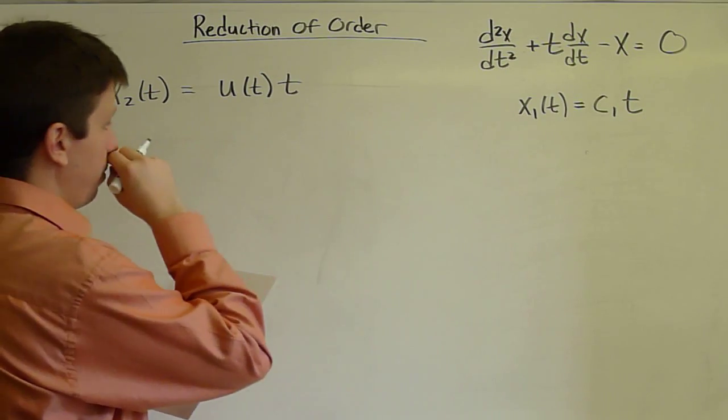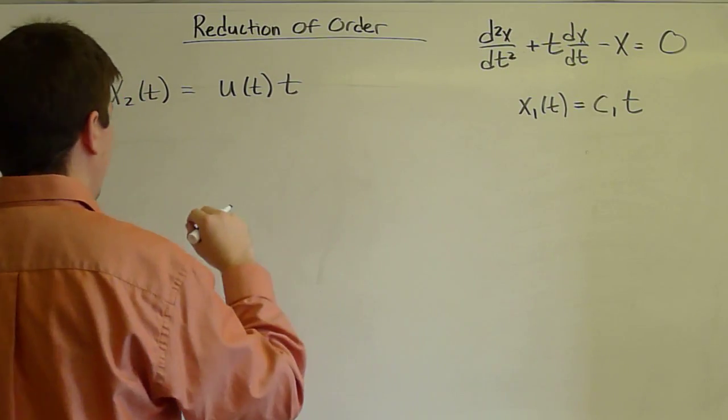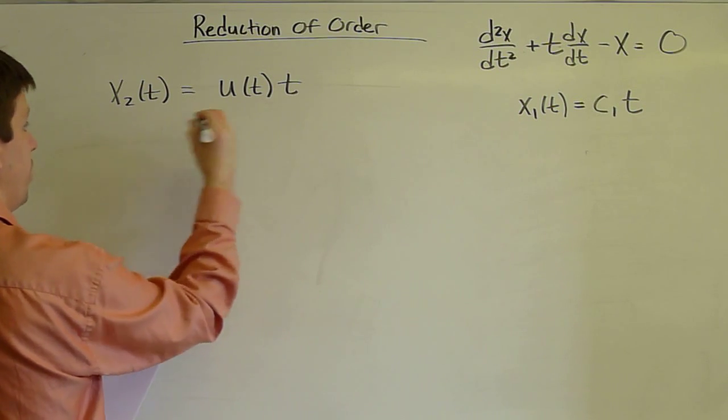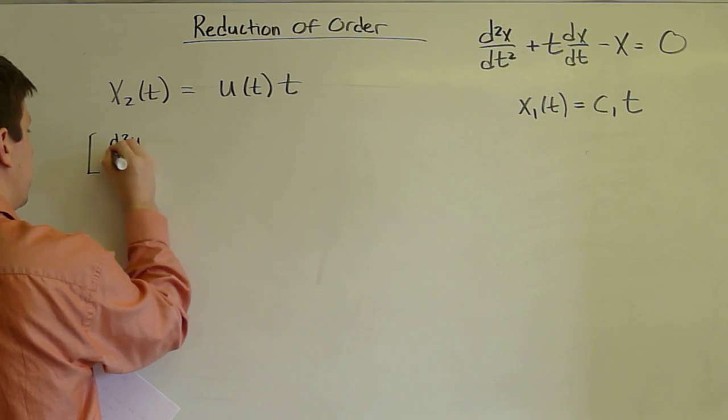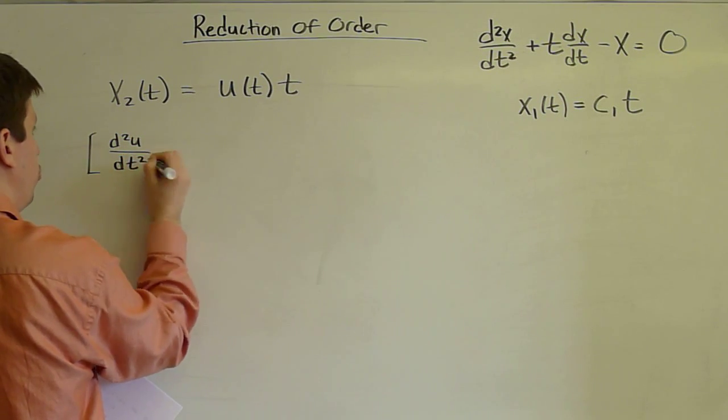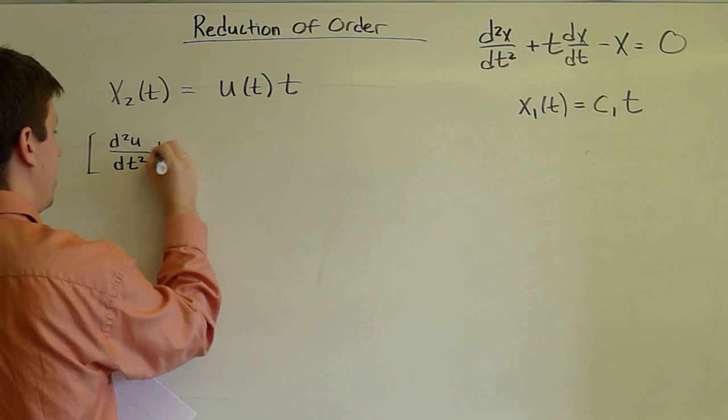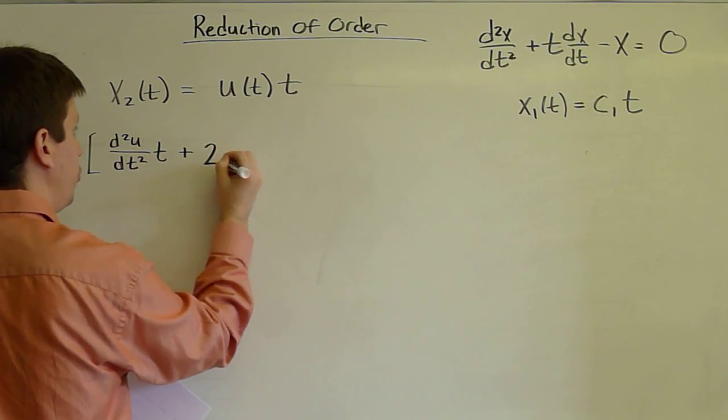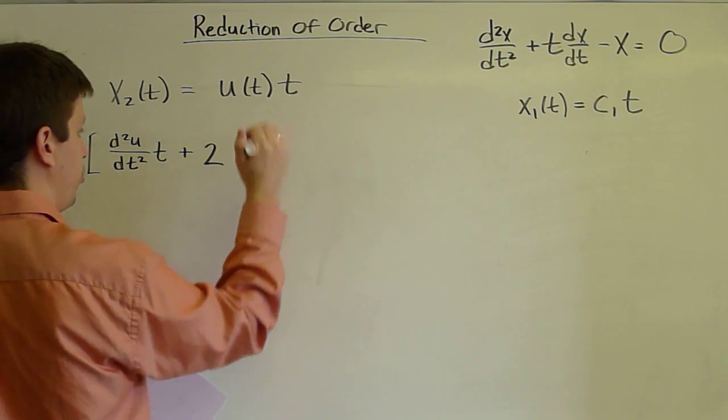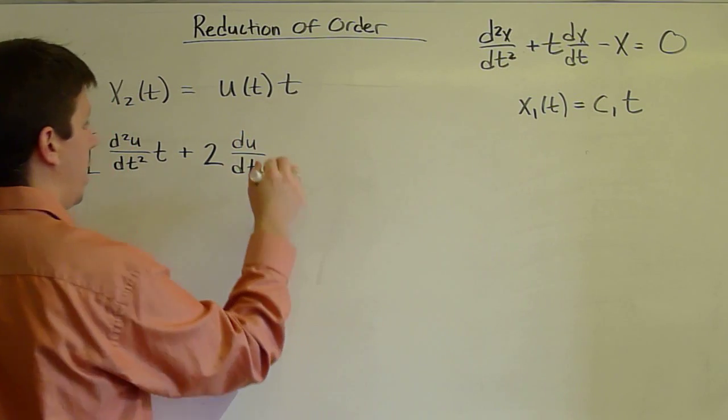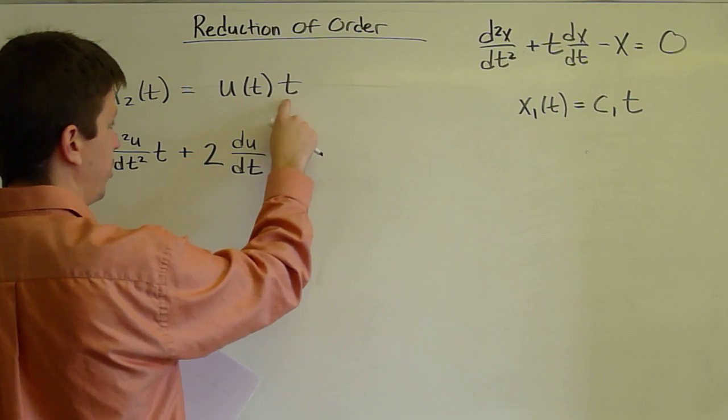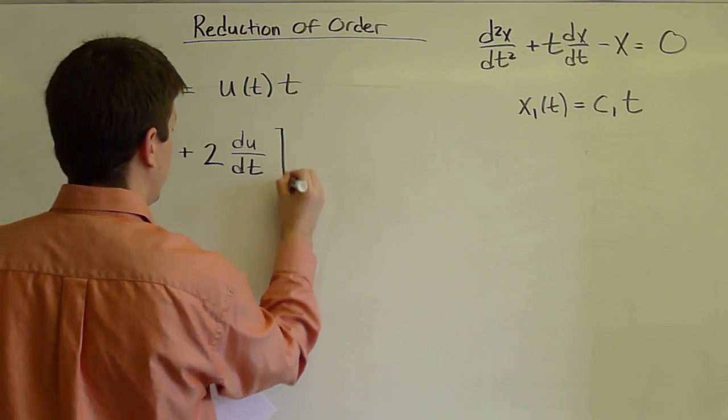So let's go ahead and plug it in. We plug in this guess. The second derivative of this product gives us the second derivative of u times t plus two times the derivative of u times the derivative of t plus u times the second derivative of t which is zero.